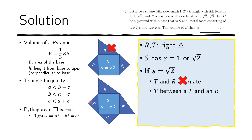Now it looks like we have a well-formed pyramid with these sides and faces. Let's check to make sure that they actually close properly, meaning that the vertices here actually meet at a single point at the apex.